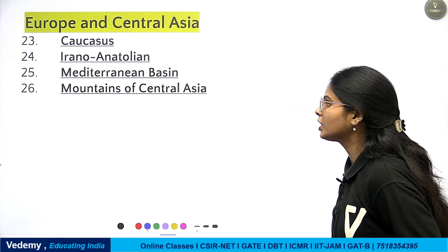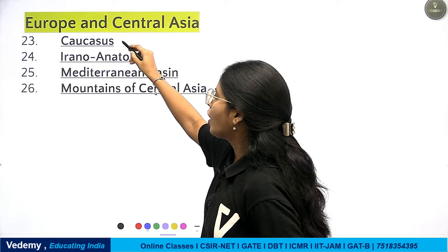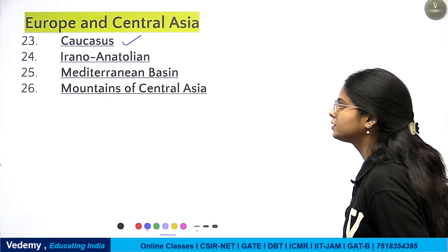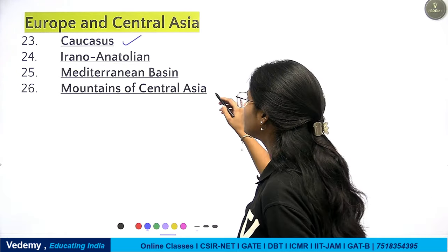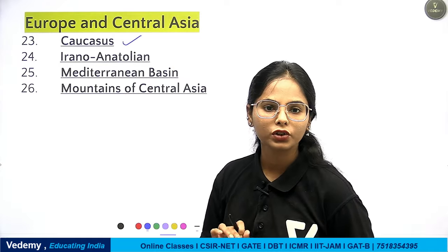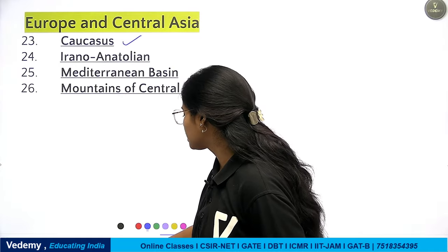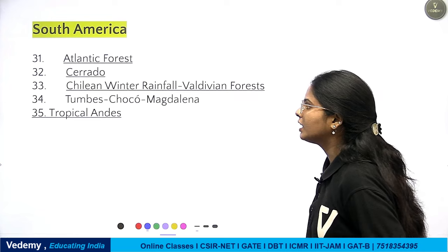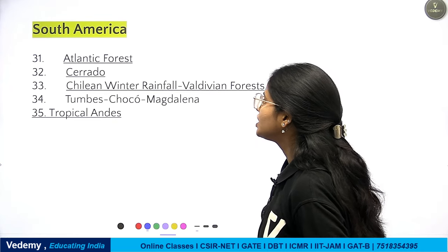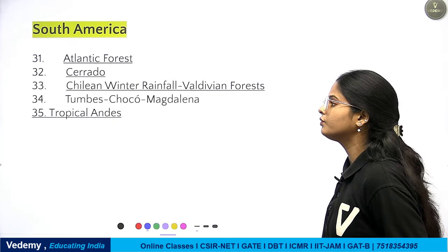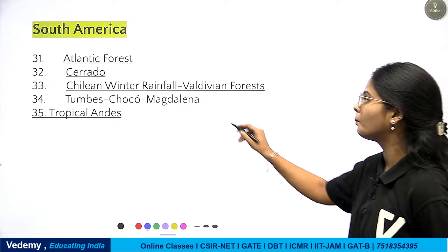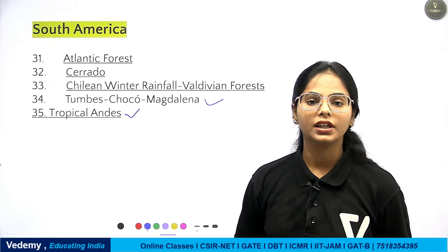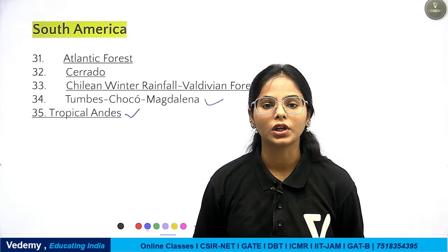Europe and Central Asia has 4 hotspots: Caucasus, Irano-Anatolian, Mediterranean Basin, and Mountains of Central Asia. South America's hotspots include Atlantic Forest, Cerrado, Chilean Winter Rainfall Valdivian Forest, Tumbes-Chocó-Magdalena, and Tropical Andes — making a total of 35 biodiversity hotspots worldwide.